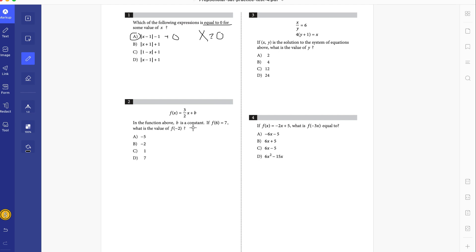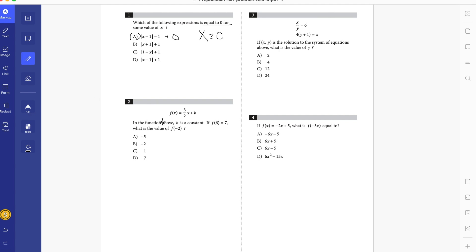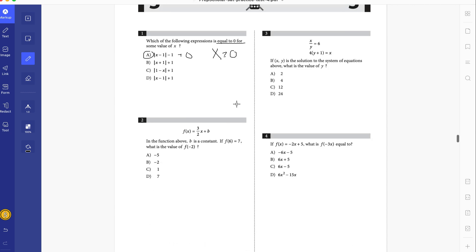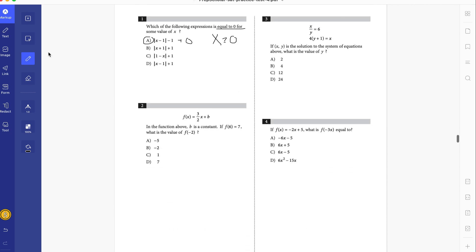Now the next one. In the function above, B is a constant. If f of 6 equals 7, what is the value of f of negative 2? Some people, especially when questions might be a little wordy, like you'll see maybe over here, I'll show you there's other tools that might come in handy. So let's finish with number two.